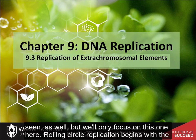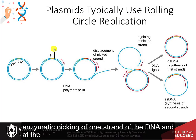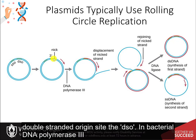Other methods can be seen as well, but we will only focus on this one here. Rolling circle replication begins with the enzymatic nicking of one strand of the DNA at the double-stranded origin site, the DSO.